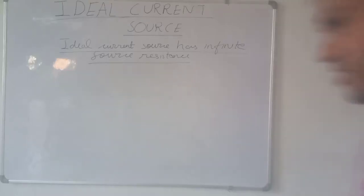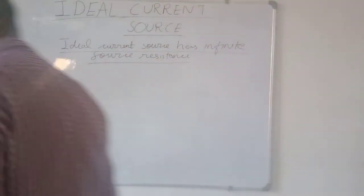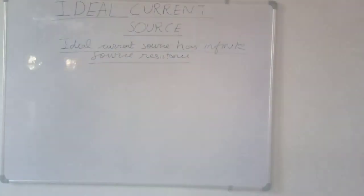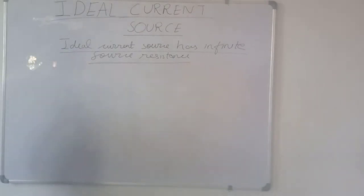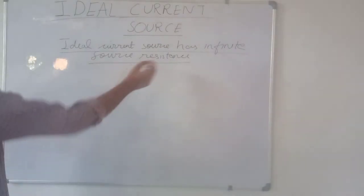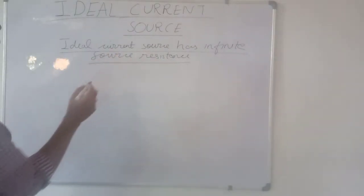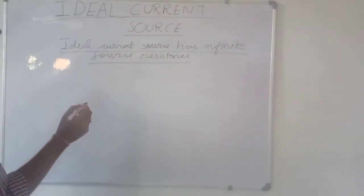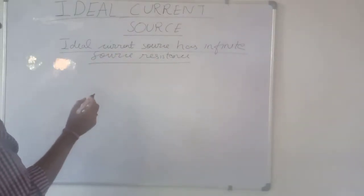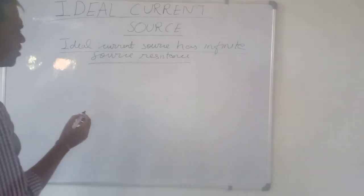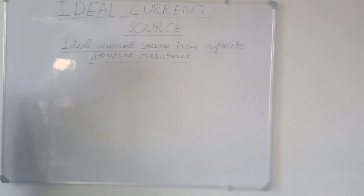In the previous video we discussed ideal voltage source, now we discuss ideal current source. The ideal voltage source has zero source resistance, whereas the ideal current source has infinite source resistance.